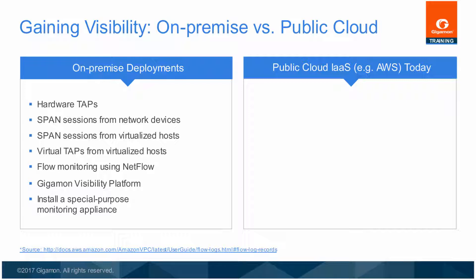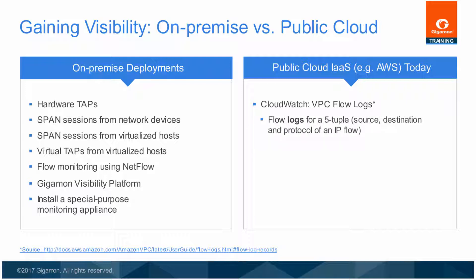In AWS, there are two ways to gain visibility into traffic. One is by using AWS CloudWatch to enable VPC flow logs. CloudWatch monitors AWS resources and provides traffic metrics. With flow logs, you can capture information about IP traffic using a 5-tuple value set going to and from network interfaces in your VPC. A 5-tuple is a set of five different values that specify the source, destination and protocol for an IP flow. After you've created a flow log, you can view and retrieve its data in Amazon CloudWatch logs.